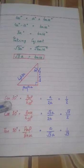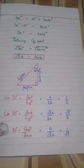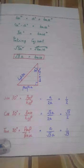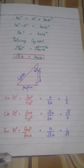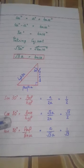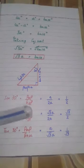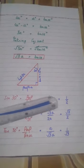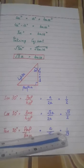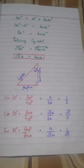So sin 30° is equal to 1/2, cos 30° is equal to √3/2, and tangent 30° is equal to 1/√3. These are the trigonometric ratios of sin 30, cos 30, and tangent 30. We have completed all three ratios of 30 degrees. Thank you.